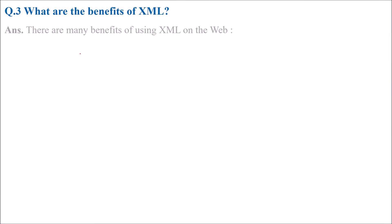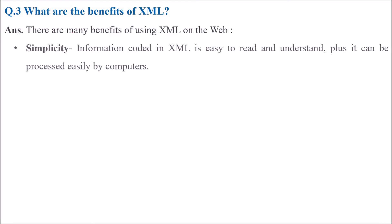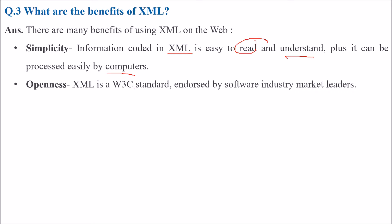What are the benefits of XML? There are a lot of benefits. First of all, it is very simple — information coded in XML is quite easy to read, understand, and can be easily processed by computers. Openness: because it is a W3C — World Wide Web Consortium — standard, it is and will be endorsed by the giants of the software industry and market leaders.